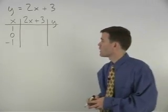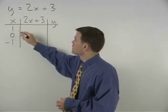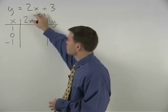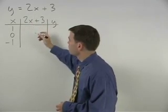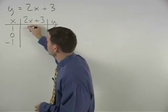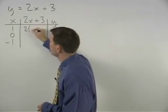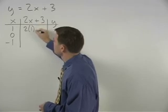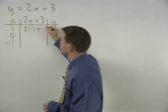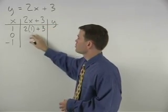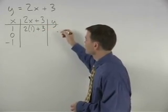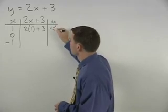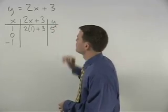Plugging a 1 into the equation for x, we have 2 times 1 plus 3, which is 2 plus 3, which is 5.